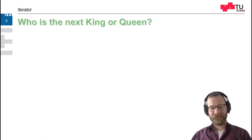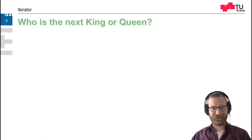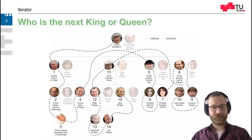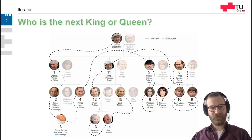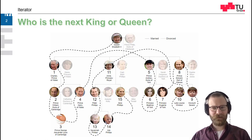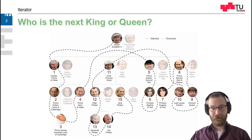Let me give you a hint. There are some very complicated rules about the order of who inherits the title of king or queen. Prince Charles is the next one, and afterwards comes Prince William, and then the first son of Prince William, Prince George Alexander-Louis, and so on. Then the brother of Prince William comes in line, and so on and so forth. It's quite complicated and it jumps around amongst the heritage tree. And if someone dies, everything changes.